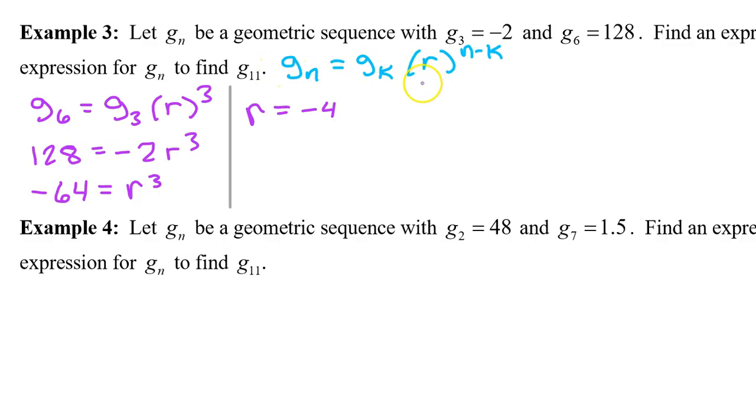Now we can write the expression for gn. gn will equal gk. For gk, just pick one of these and I always pick the smaller one. So I'm going to put the negative 2 and I will remember that k is 3. And then times r, which we just found is negative 4, to the n minus k power. So that's n minus 3 power. And that's it. This is the expression for gn.